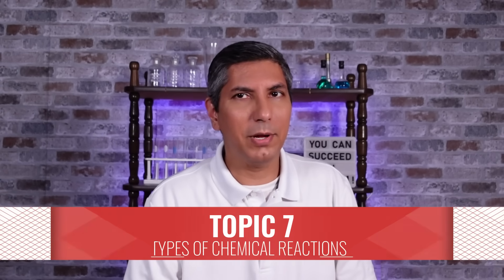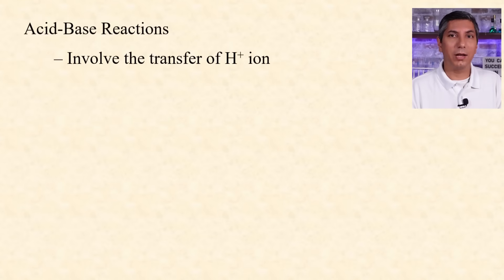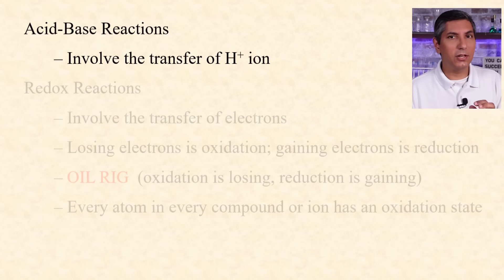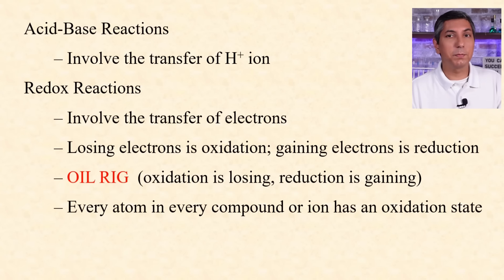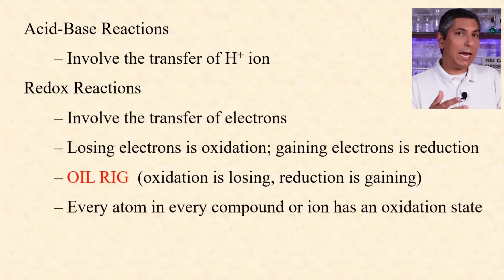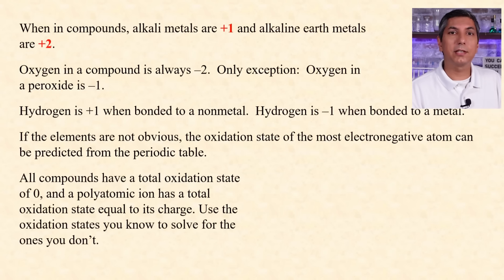In AP Chemistry, there are three primary types of chemical reactions. Acid-base reactions involve the transfer of a proton — remember that a proton is essentially a hydrogen ion, or H+. Oxidation-reduction reactions involve the transfer of electrons. The species that loses electrons is said to be oxidized, and the one that gains electrons is reduced. Be able to determine the charge, or oxidation state, of any atom in a species.